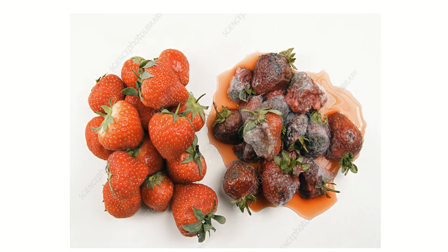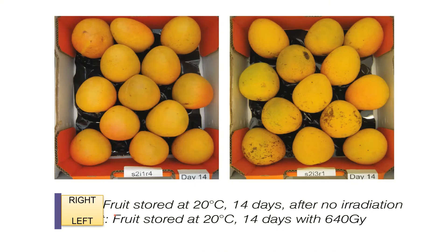Another example: fruits stored at 20 degrees Celsius with 640 grays of radiation are still looking fresh compared to fruits which are not irradiated but stored at the same temperature for the same time duration.